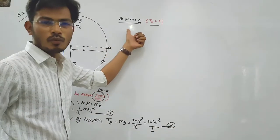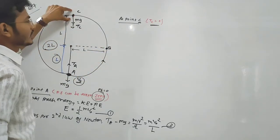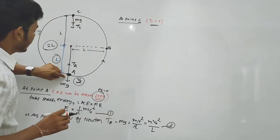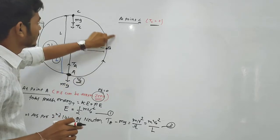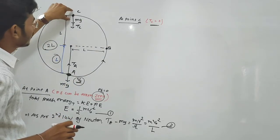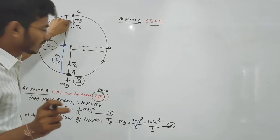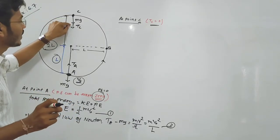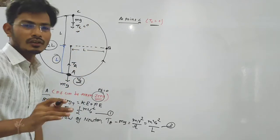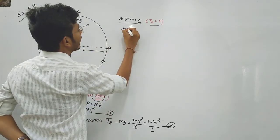At point C, the tension Tc is equal to zero — the string just goes slack at the topmost point. At point C, gravity mg acts downward toward the center, providing the centripetal force. So with Tc equal to zero, we apply the mechanical energy equation.